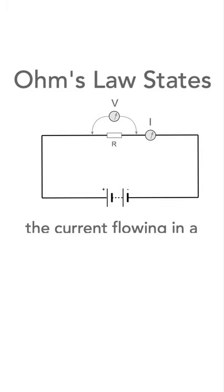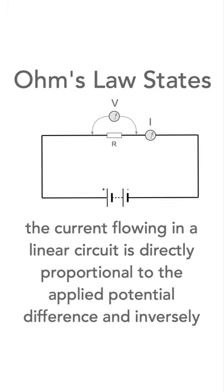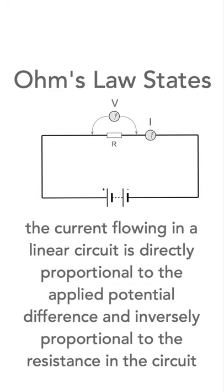Ohm's law states that the current flowing in a circuit is directly proportional to the applied potential difference, and inversely proportional to the resistance in the circuit.